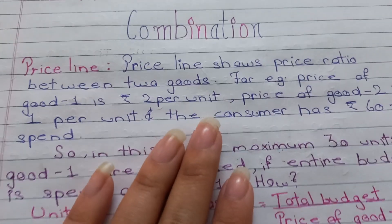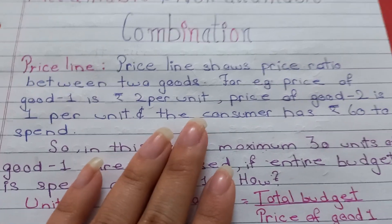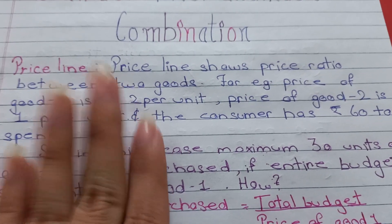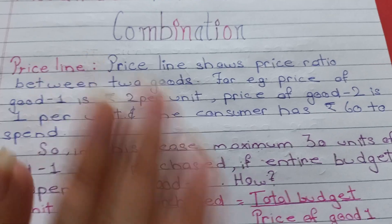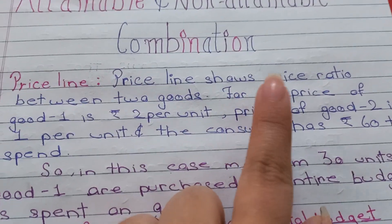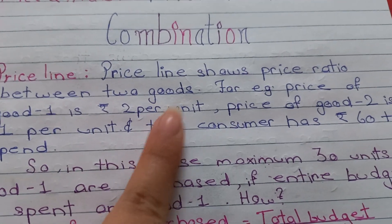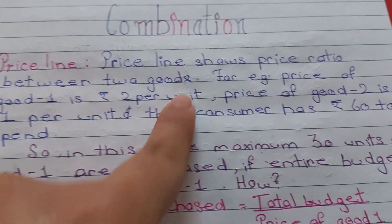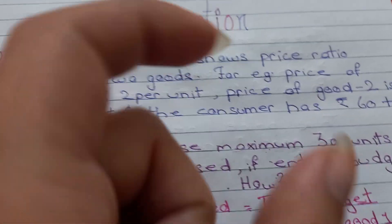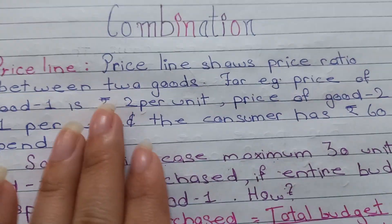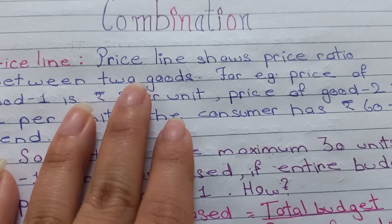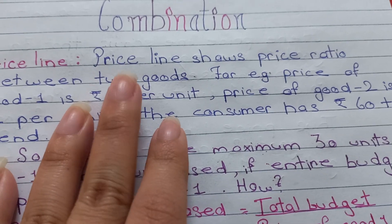We already know that budget line is also known as price line. Price line shows the price ratio between two goods — यानि price line show करती है क्या price ratio है between two goods, दो goods के बीच का.